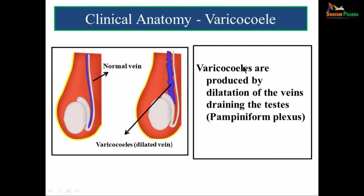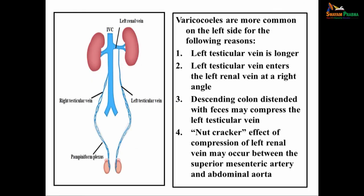Varicocele is produced by dilatation of the veins draining the testis, particularly the pampiniform plexus of veins. Varicoceles are more common on the left side because: the left testicular vein is longer; it enters the left renal vein at a right angle; descending colon distended with feces may compress the left testicular vein; and the nutcracker effect of compression of the left renal vein between the superior mesenteric artery and abdominal aorta may occur.